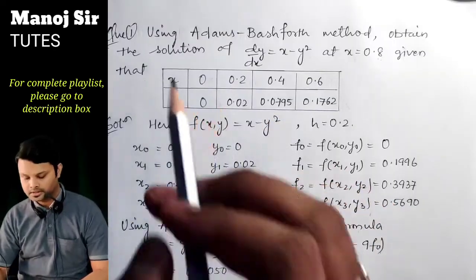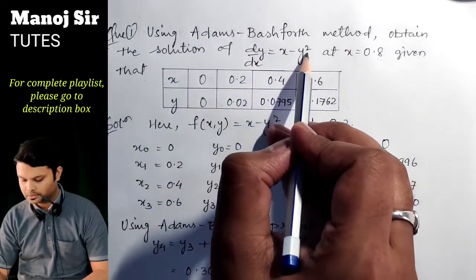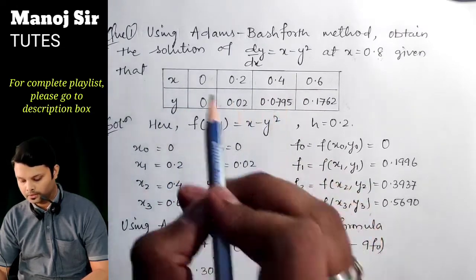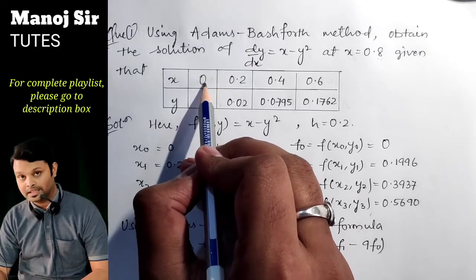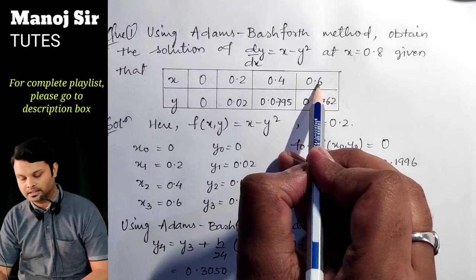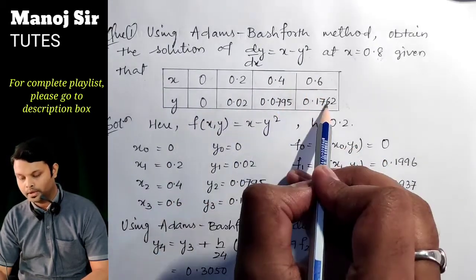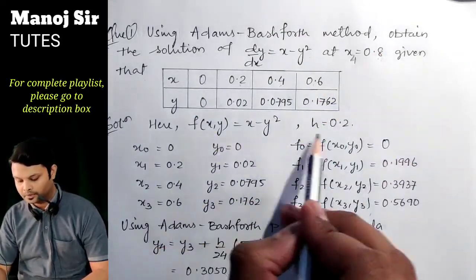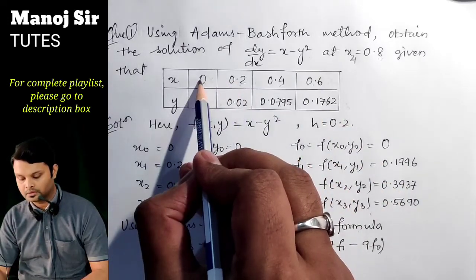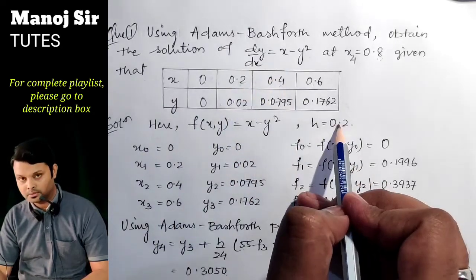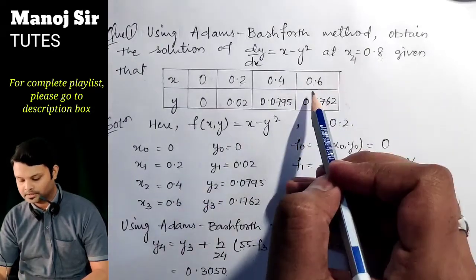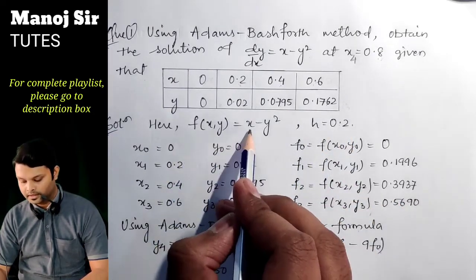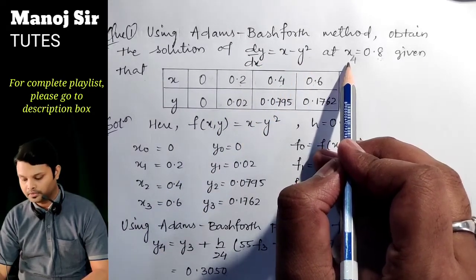Now let us consider the example problem. Using the Adams-Bashforth method, obtain the solution of dy/dx = x − y² at x = 0.8, given tabulated values of x and corresponding y. We identify x₀, x₁, x₂, x₃ from the table, and accordingly y₀, y₁, y₂, y₃. The next point x₄ = 0.8, and the step size h = 0.2. The function is f(x, y) = x − y².